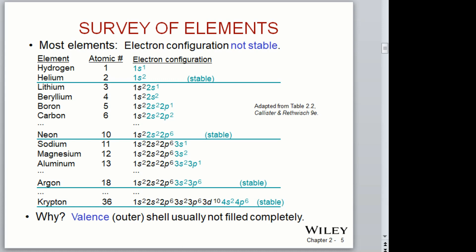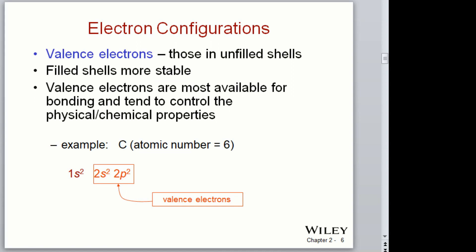This moves us into electron configurations. Here is an example of carbon: 1s², 2s², 2p². The valence electrons are highlighted in red — there are two electrons in the 2s and two electrons in the 2p, a total of four valence electrons, but an atomic number of six because there are also two in the inner subshell. The filled shells are stable, and the valence electrons are mostly available for bonding and tend to control physical and chemical properties.